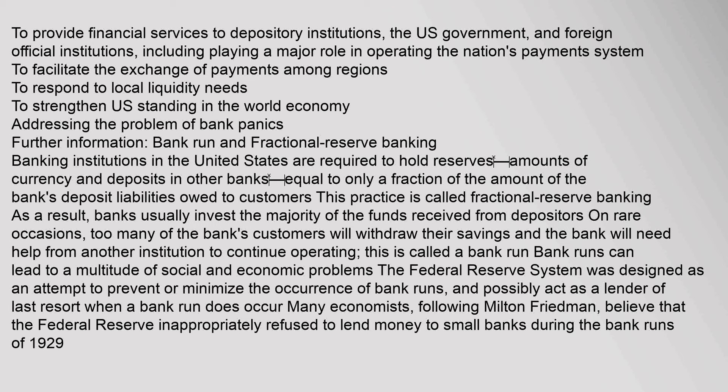Banking institutions in the United States are required to hold reserves — amounts of currency and deposits in other banks — equal to only a fraction of the amount of the bank's deposit liabilities owed to customers. This practice is called fractional reserve banking. As a result, banks usually invest the majority of the funds received from depositors. On rare occasions, too many of the bank's customers will withdraw their savings and the bank will need help from another institution to continue operating — this is called a bank run. The Federal Reserve System was designed to prevent or minimize the occurrence of bank runs, and possibly act as a lender of last resort.